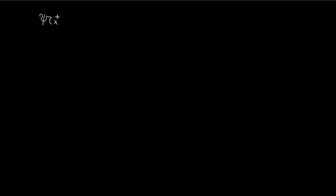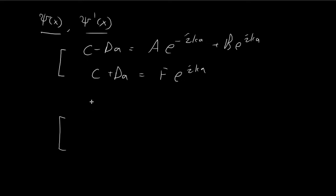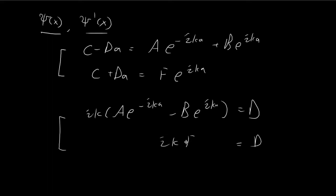We now have four relationships from the continuity requirements. From continuity of ψ(x): C − Da = A·e^(−ika) + B·e^(ika), and C + Da = F·e^(ika). From continuity of ψ'(x): ik(A·e^(−ika) − B·e^(ika)) = D, and D = ik·F·e^(ika). We now combine these to find the relationship between A and F.